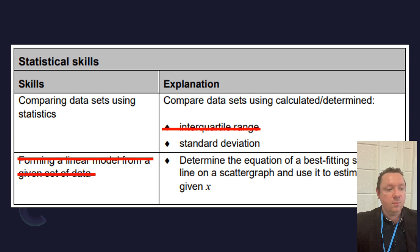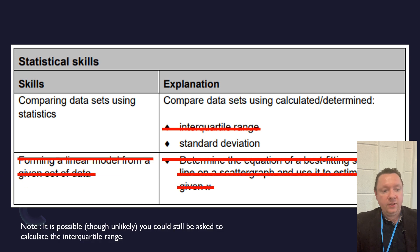The last one: from the linear equation model, given a set of data, you'll not be asked to find the line of best fit for a scatter graph. So that is it. And there's a little caveat there, it's possible though unlikely you could still be asked to calculate the interquartile range.